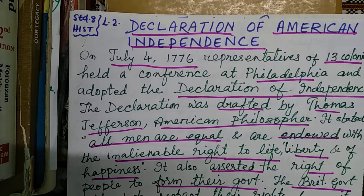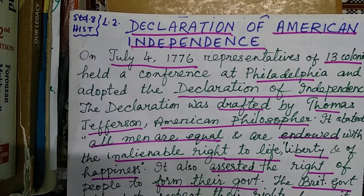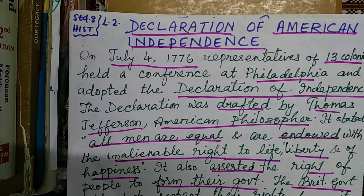Next, we are learning the Declaration of Independence. Children, in the beginning of your lesson there is a timeline we need to follow. All of you mark them and in your paper sheet or notepad, horizontally just draw these lines and mention the events given in the timeline.